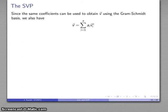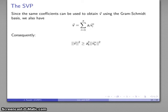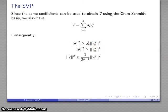Since the same coefficients can be used to obtain v using the Gram-Schmidt basis, we also have that same vector as a linear combination of the Gram-Schmidt basis vectors where at least one coefficient is an integer whose absolute value is greater than or equal to one. So the square of the magnitude is greater than or equal to a_k squared times ||v_k*||^2. Since a_k squared is at least one, the magnitude squared must be at least ||v_k*||^2, and applying our earlier inequality gives ||v||^2 ≥ (1/2^(k-1)) ||v_1*||^2.